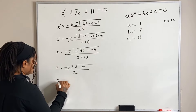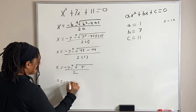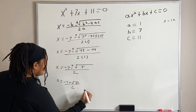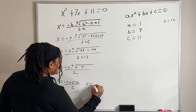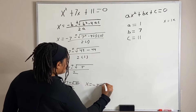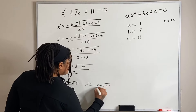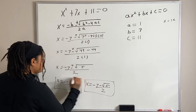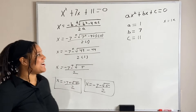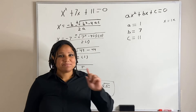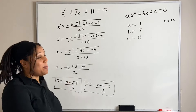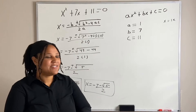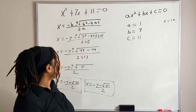Breaking that up, we have x equals negative 7 plus root 5, all over 2, and x equals negative 7 minus root 5, all over 2. And that is your final answer. We're going to do one more example just to make sure you have it down.